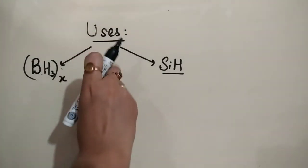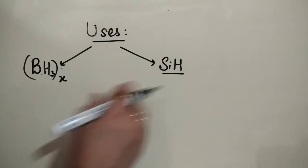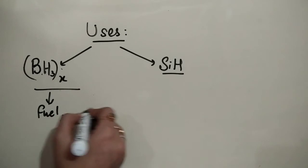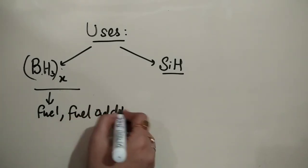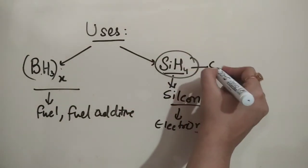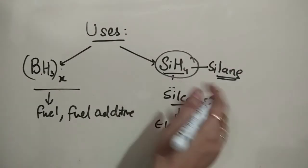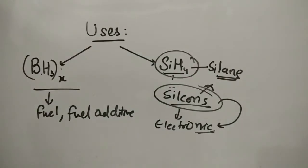Two important uses of covalent hydrides: boron hydrides are used as fuel and fuel additives; silicon hydrides (silanes — hydrides of silicon with hydrogen) are very high-purity silicon used in electronic gadgets.